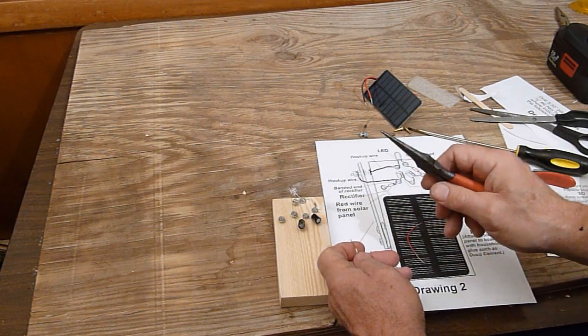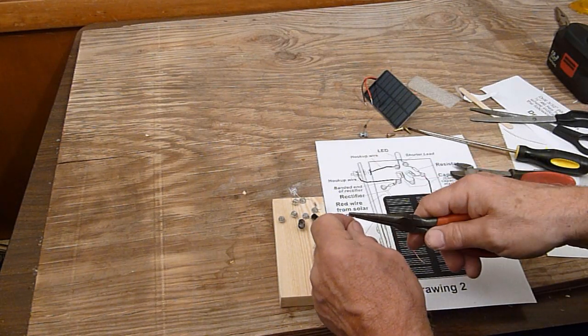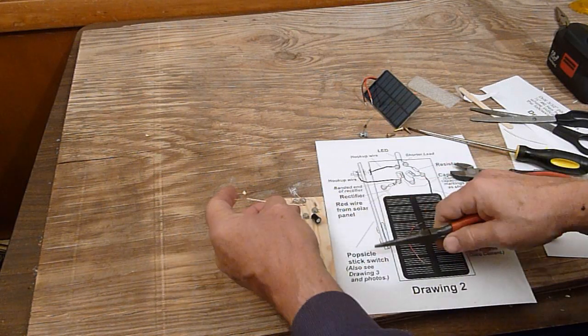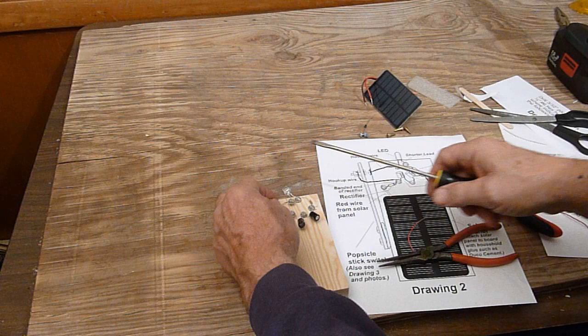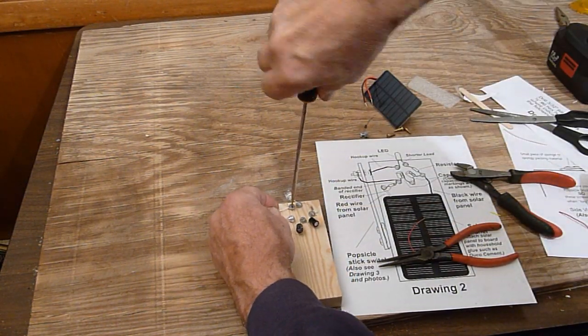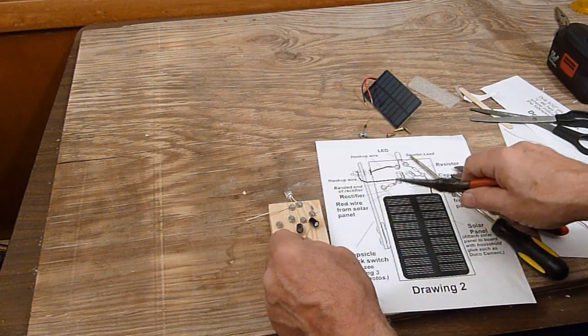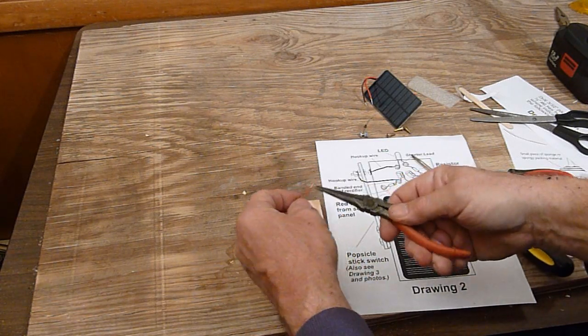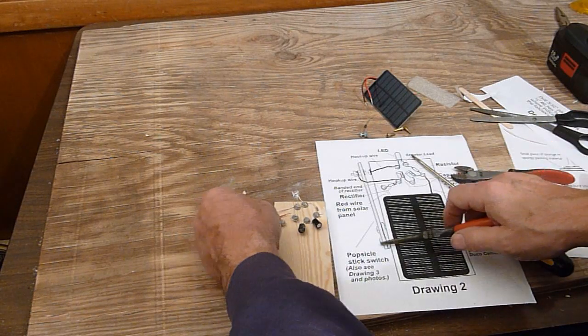We are going to do the popsicle stick switch in a few moments and we will use drawing three in order to show how it's done. Right now we want to make another connection to here. This, as I said before, goes to the popsicle stick switch. But first we will make the connection. This other one that goes to the switch, we put in here.